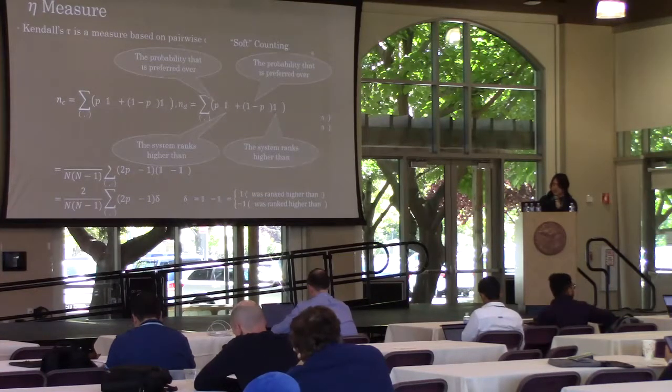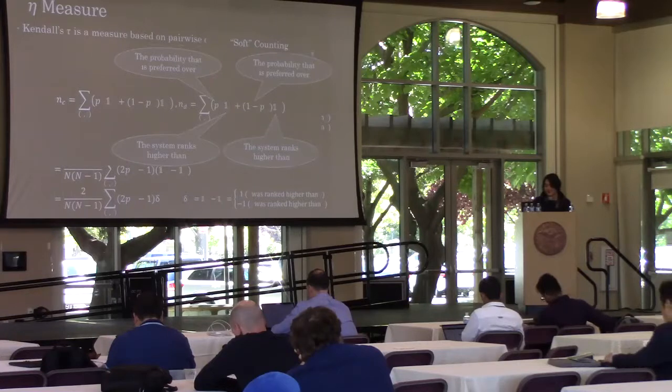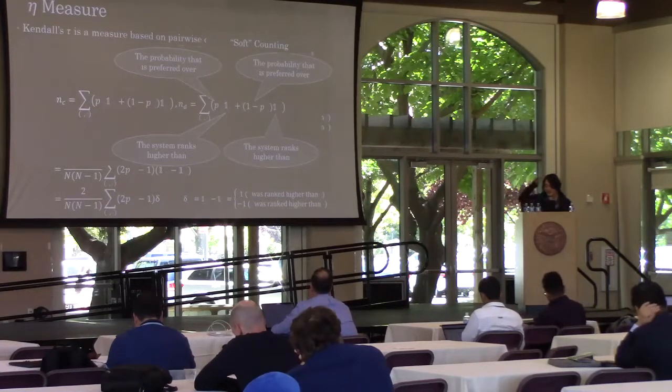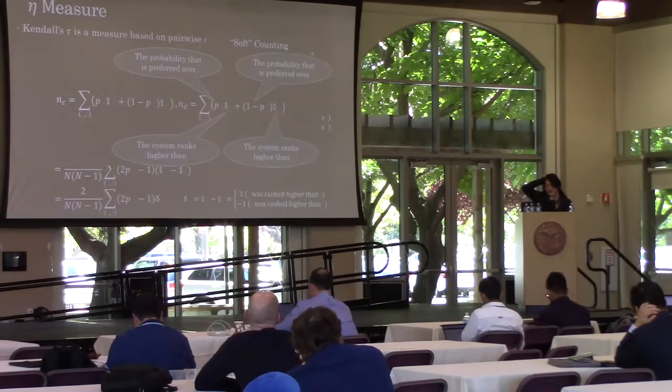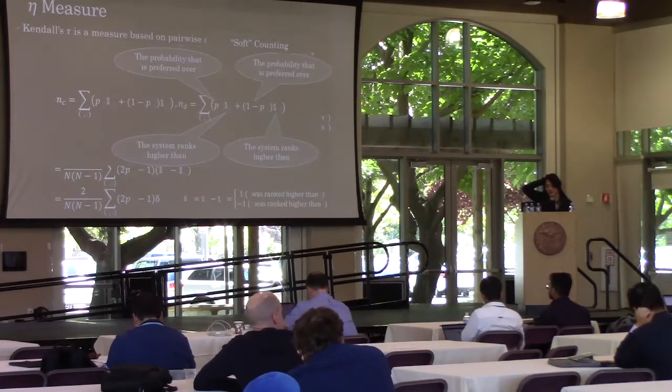The discordant pairs can be obtained as the sum of the discordant probabilities. If the system ranks j higher than i, then sum up pij, the probability that i is preferred over j.